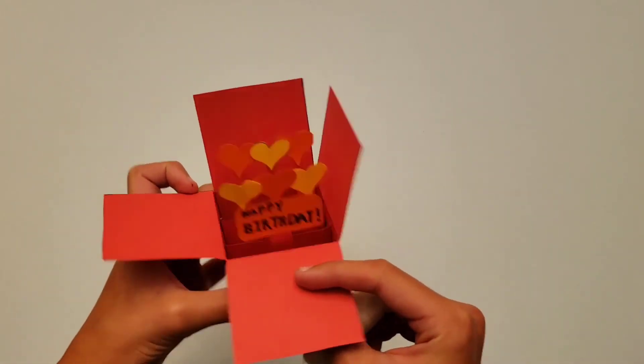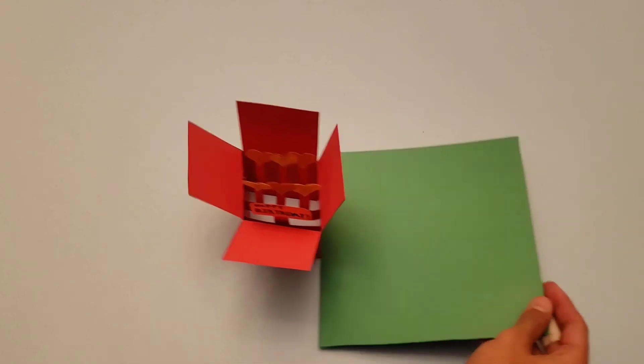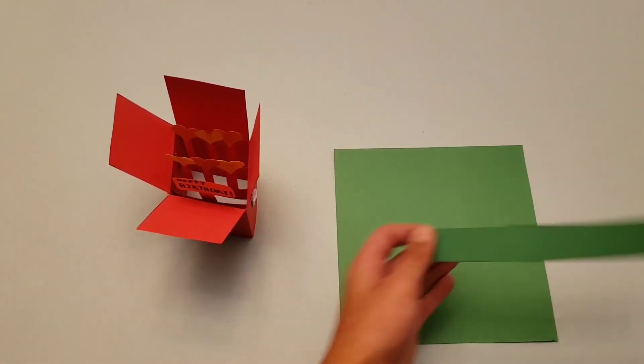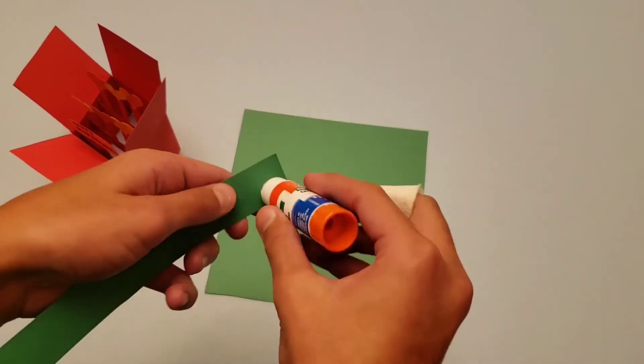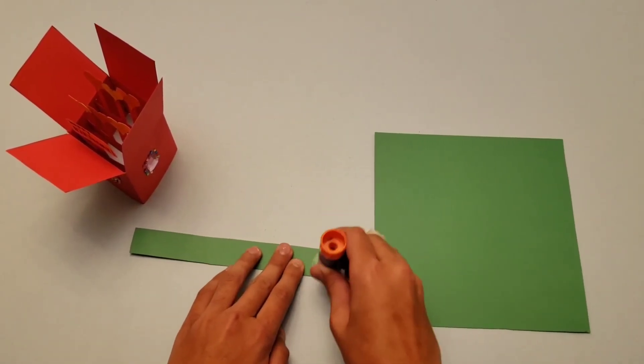Now this is how your gift box should look like. And now using a square piece of paper, any color, you're going to take another small strip of paper, and attach it into the middle of the square on both sides.